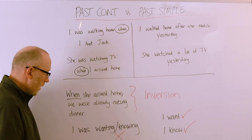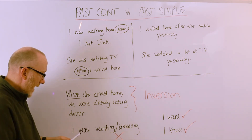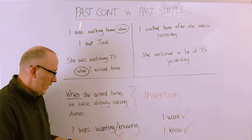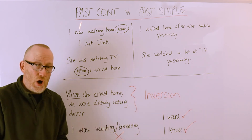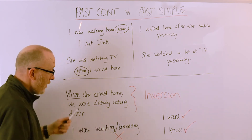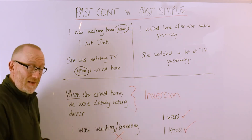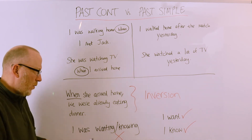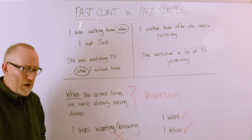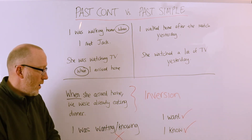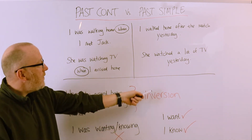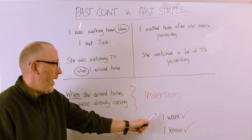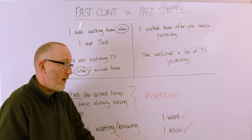Now, two verbs — 'to want' and 'to know' — are two verbs that you will never use in the past continuous. 'I was wanting' or 'I was knowing' are completely wrong. We only use these in the simple form: 'I want' and 'I know.'